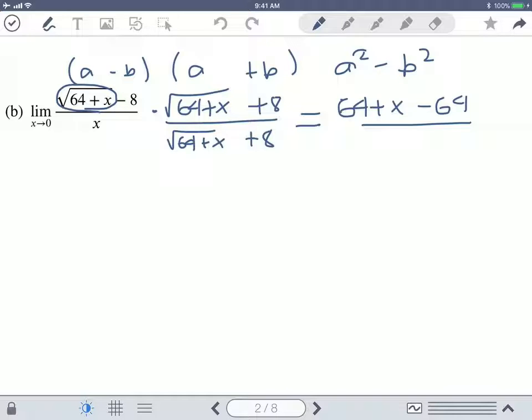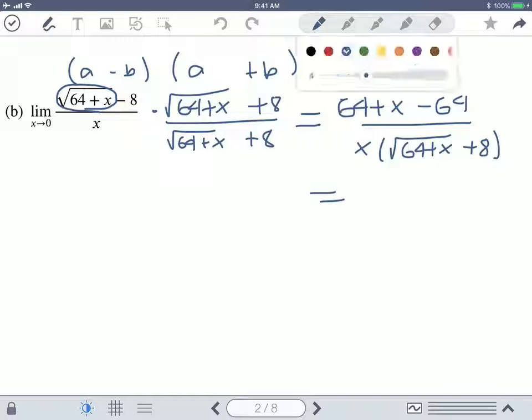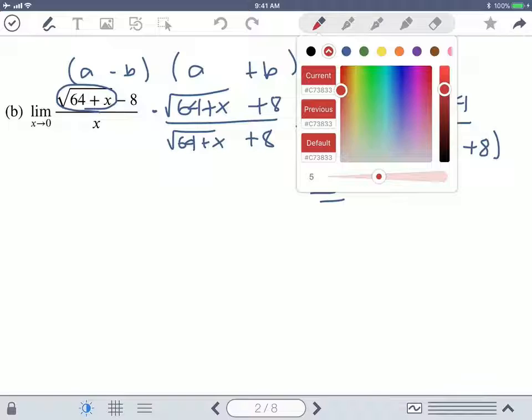And in the bottom, nothing simplifies a lot, but you're going to have an x and then you're going to leave the root of 64 plus x and then the plus eight outside. So in the top, again, these things cancel.